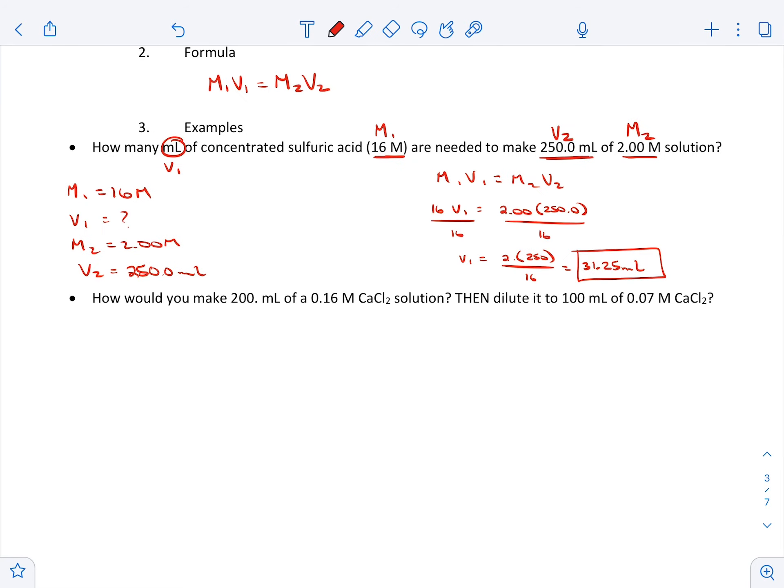Okay, so our next item of business is this is actually going to help us with the lab that we do later. All right, how would you make a 200 mil solution that's 0.16 CaCl2? So what I need to do is I need to figure out how many grams of calcium chloride I need to add to my 200 milliliters of solution.